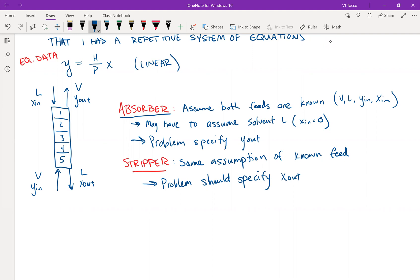So let's start with the absorber. And if we know the absorber, we're going to put a little checkmark next to what we know. We know L, x_in, V, y_in, V, and y_out.